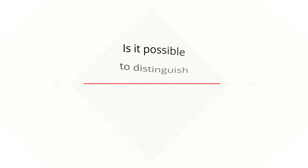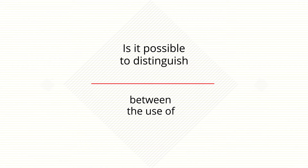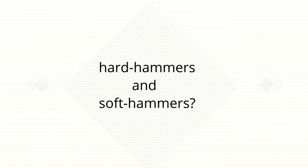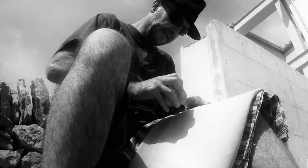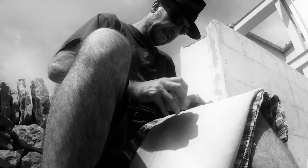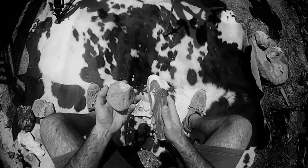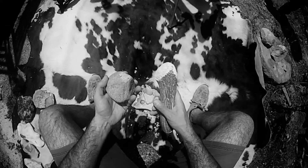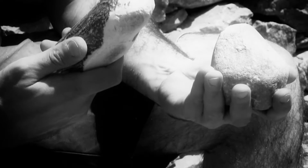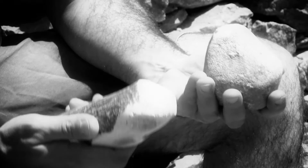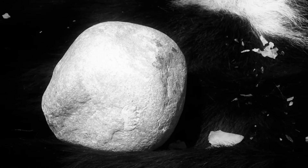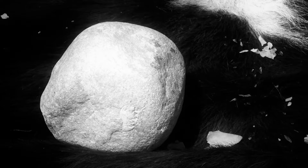Is it possible to distinguish between the use of hard hammers and soft hammers? Knapping hammers can be grouped into two different types: hard hammers — hard stones — or soft hammers — soft stones, antler, or wood.